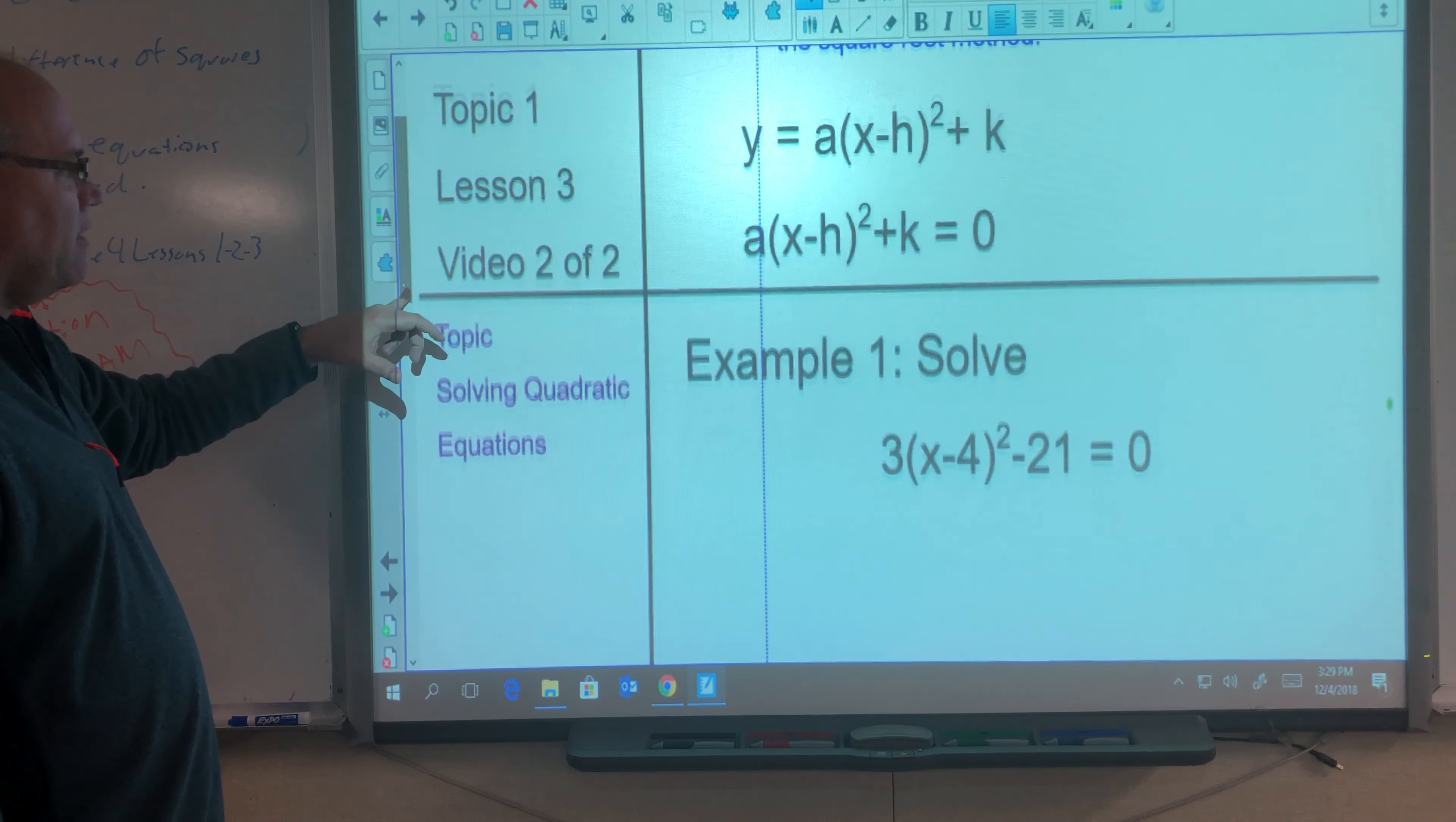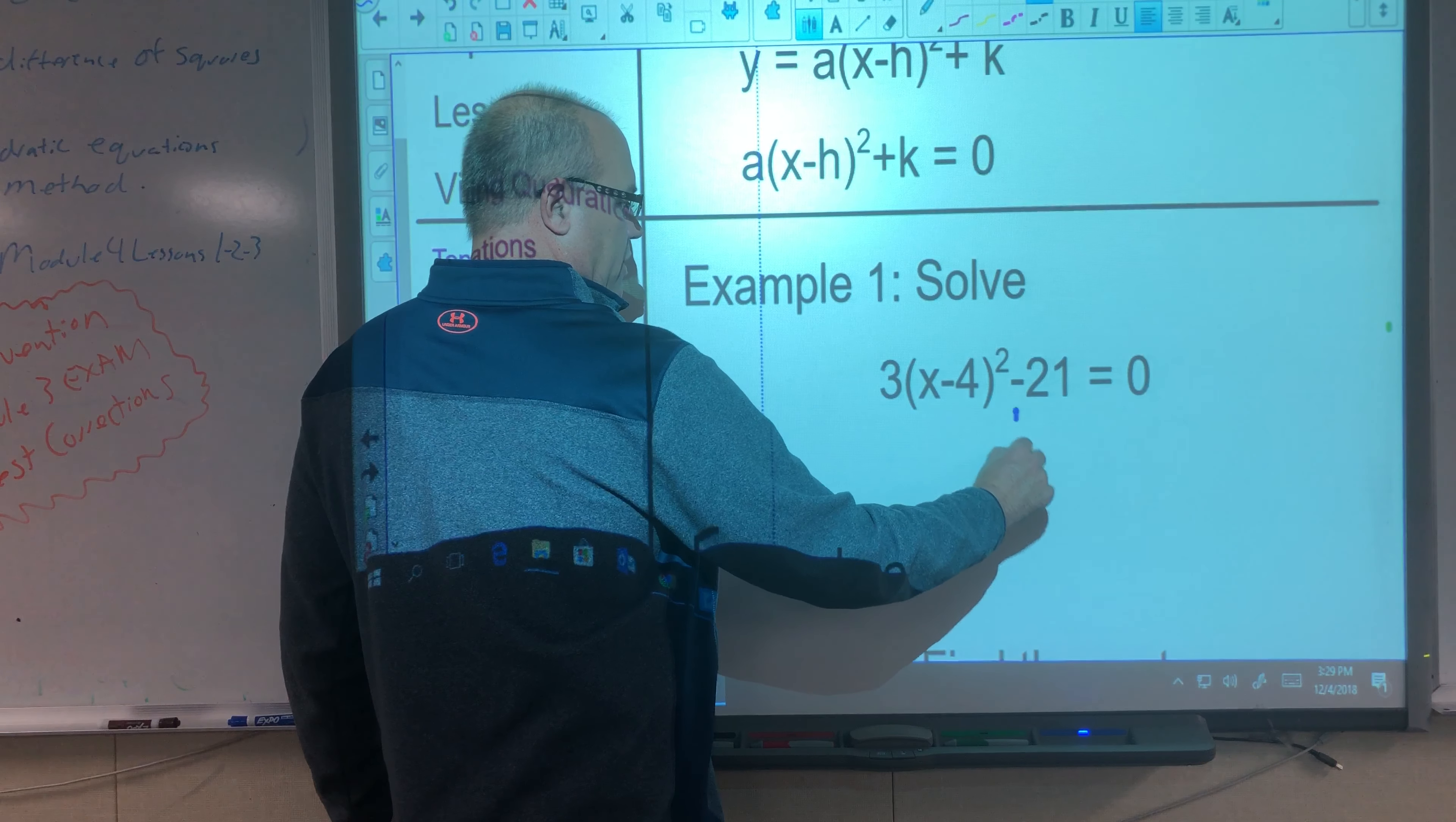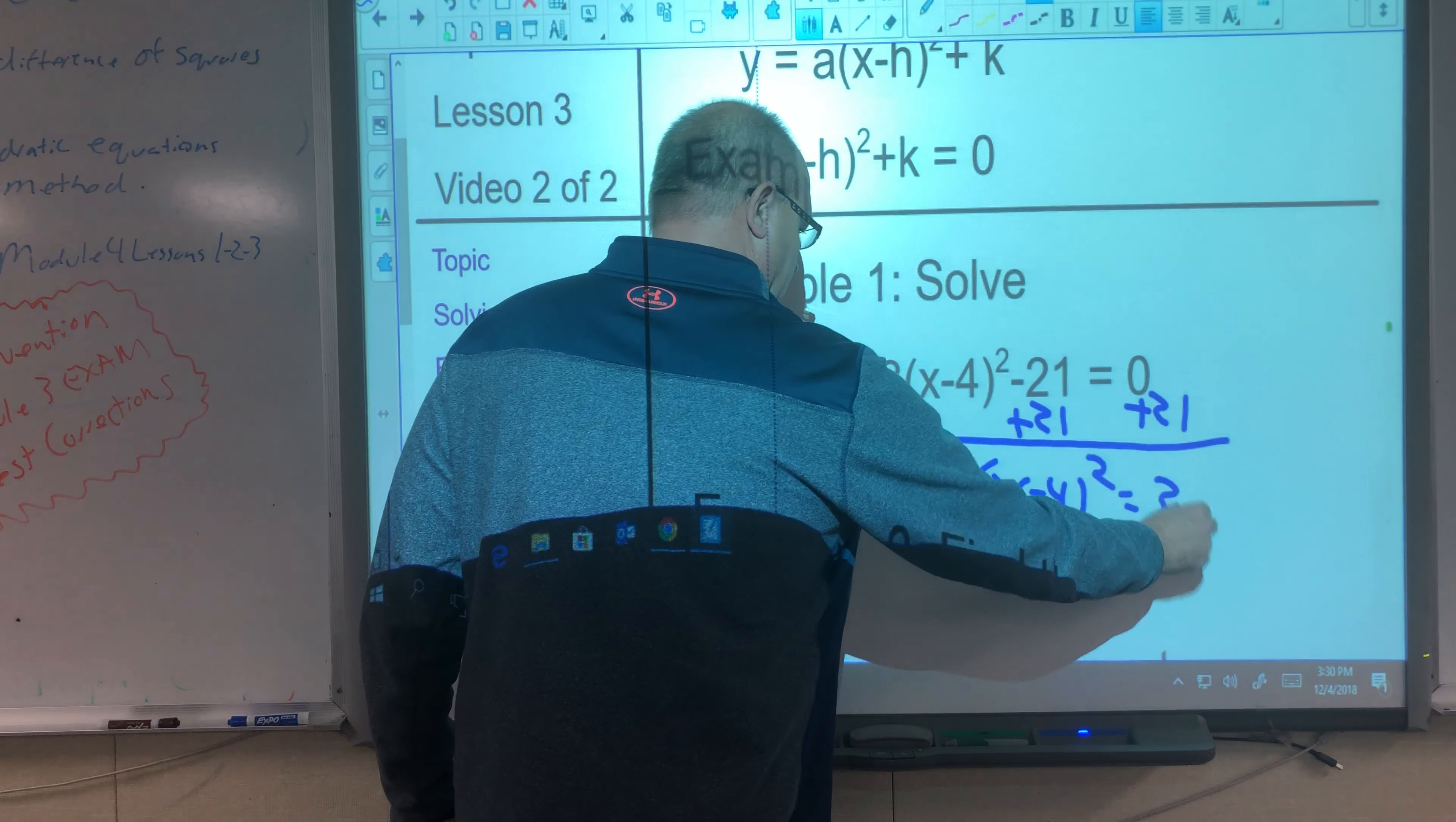Our first example here is we're going to solve 3 times x minus 4 squared minus 21 equals 0. The first thing we want to do is move the 21 over, so we're going to add 21, add 21. So then we get 3 times x minus 4 squared equals 21.